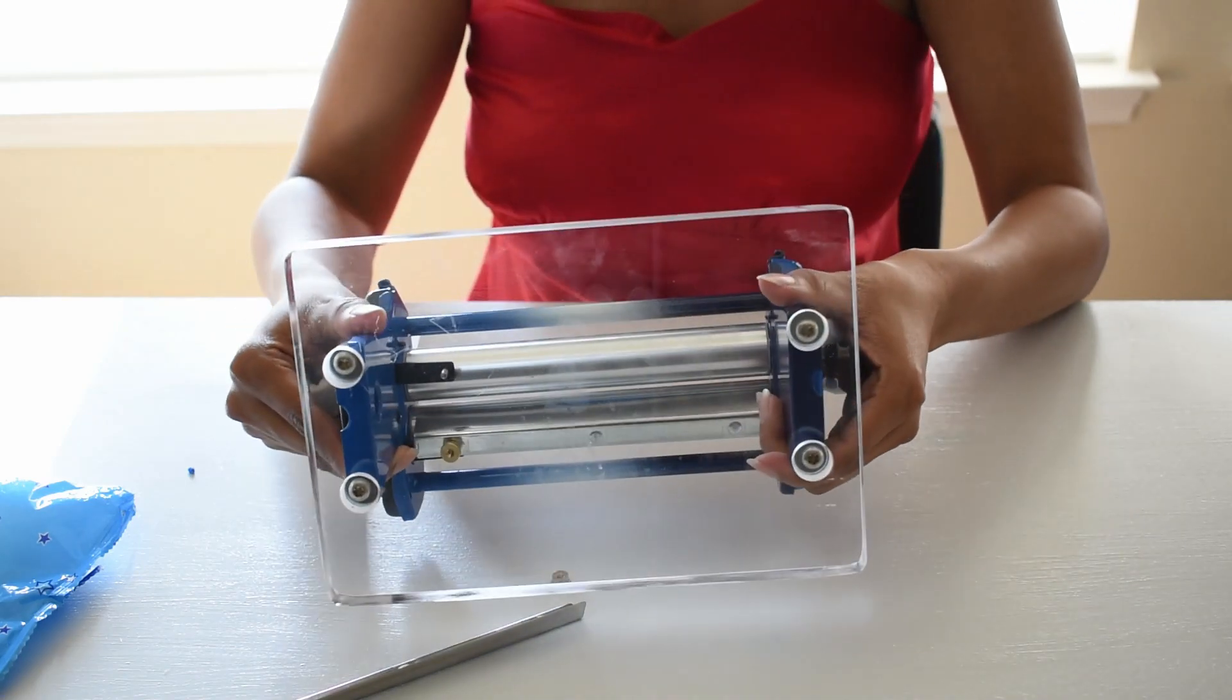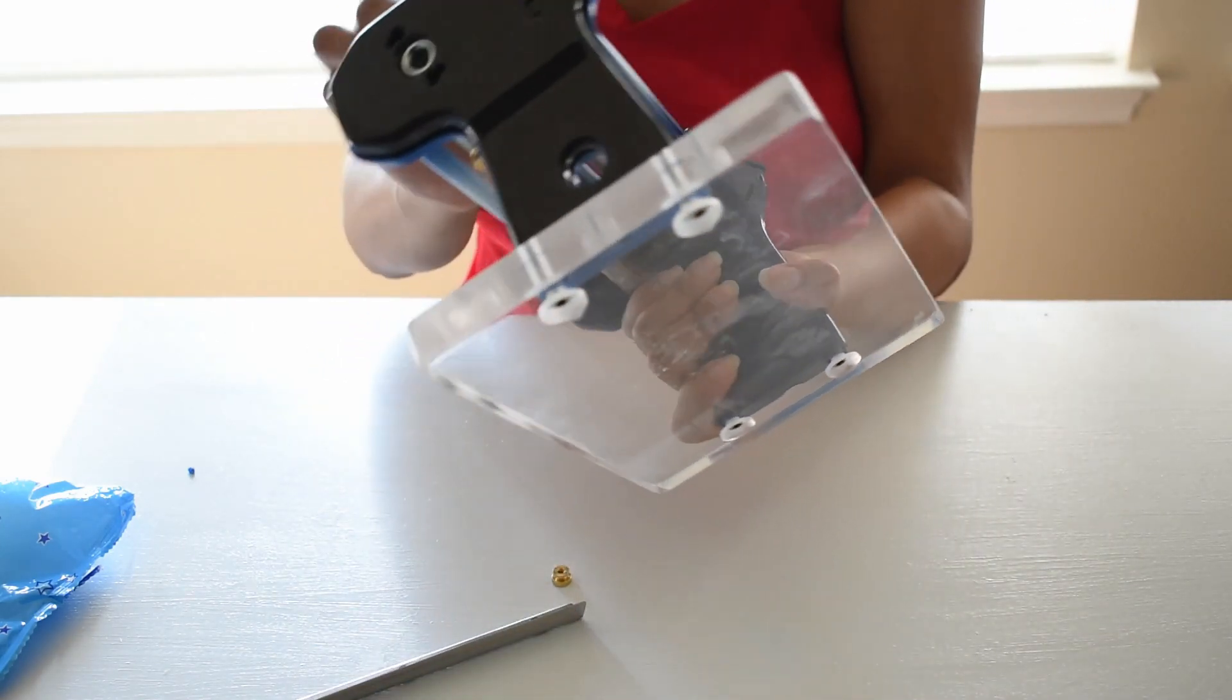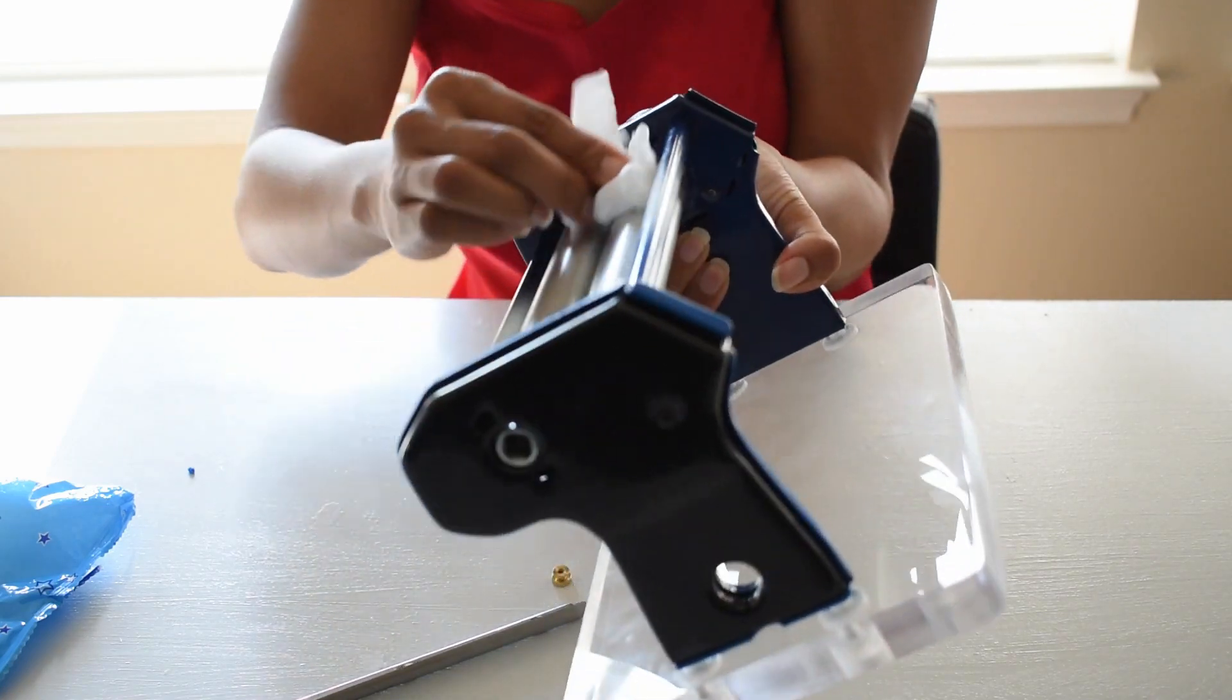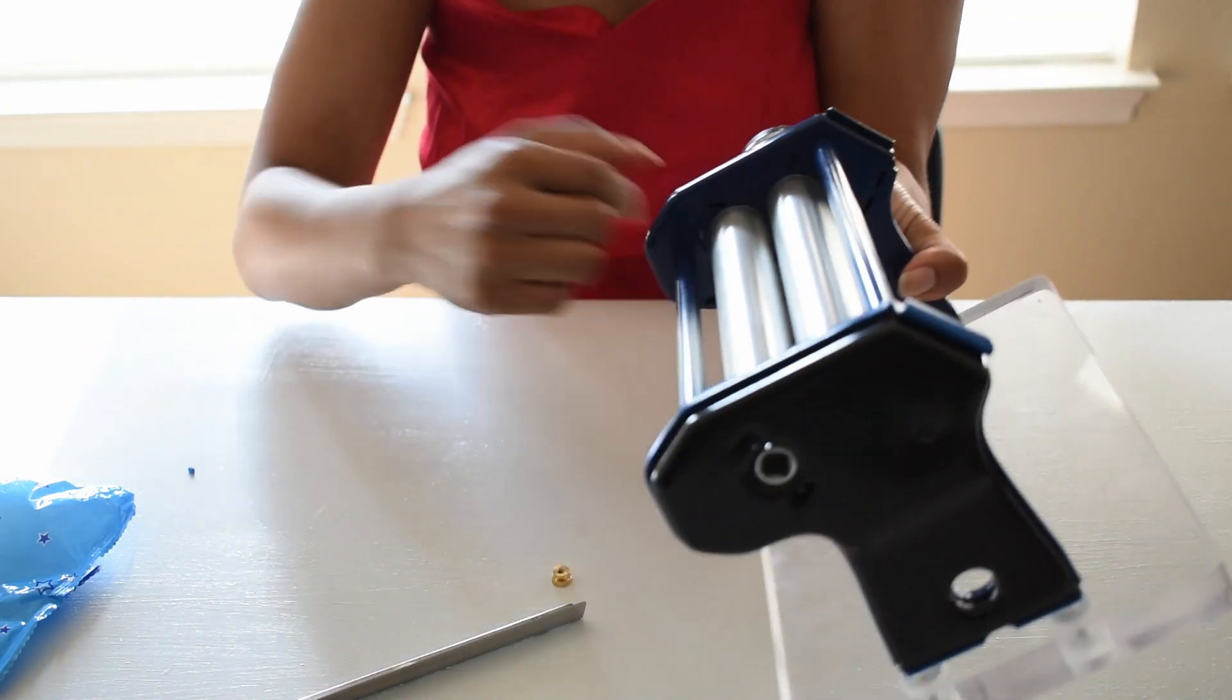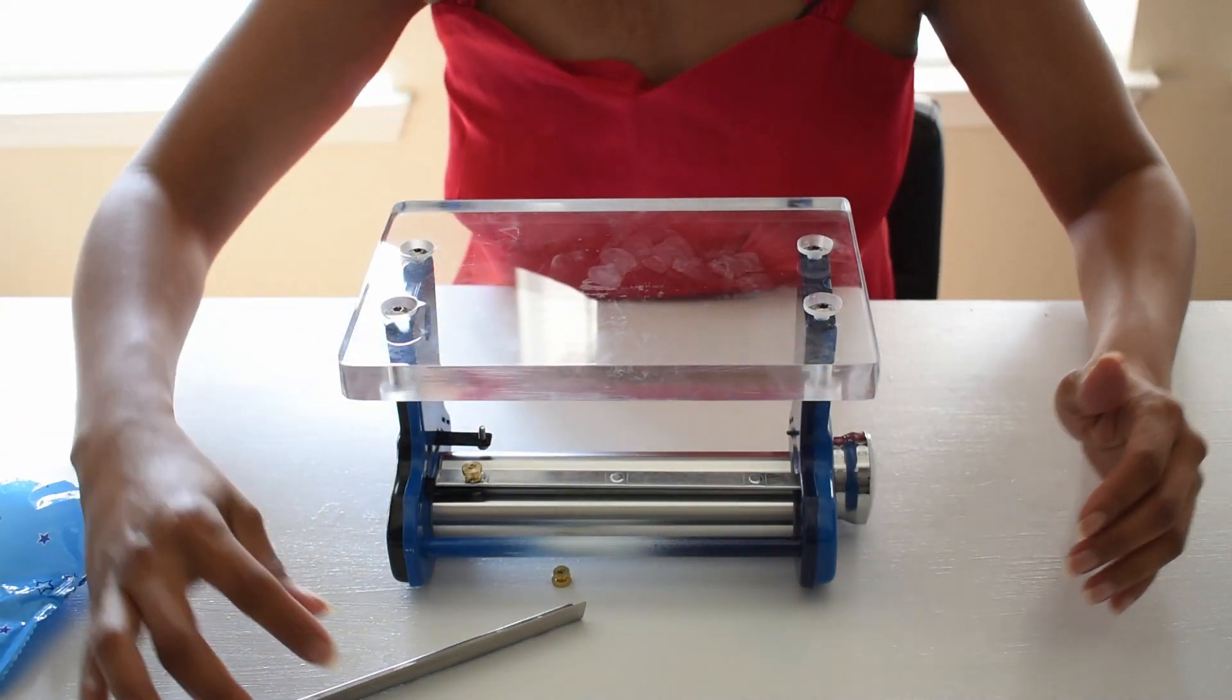Also this is a perfect time to actually clean your rollers. You can just clean it here and then clean the top. Now normally when I clean these rollers I would have the actual crank to move it. But in this quick guide I'm just going to show you how to actually remove it and clean it.